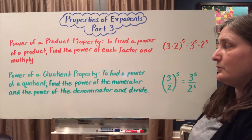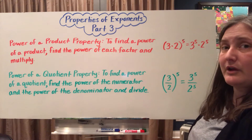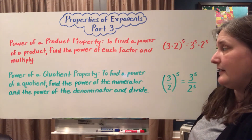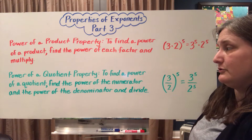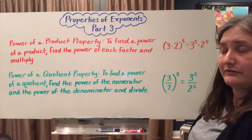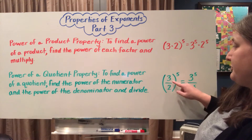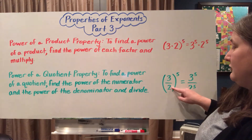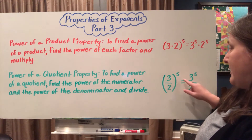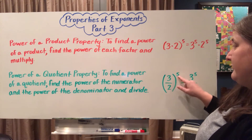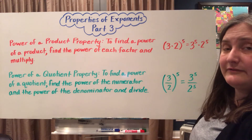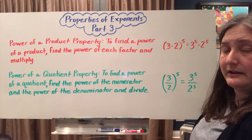The power of a quotient property says that if you're trying to find the power of a division problem or a quotient, you can find the power of your numerator, the power of your denominator, and then divide to get your final answer. So 3 divided by 2 to the 5th power can be done by finding 3 to the 5th power as my numerator, 2 to the 5th power as my denominator, and then dividing those answers to get our final answer.